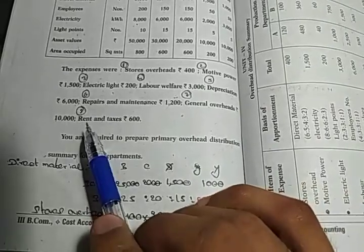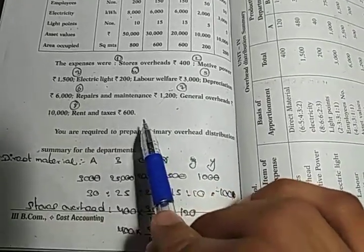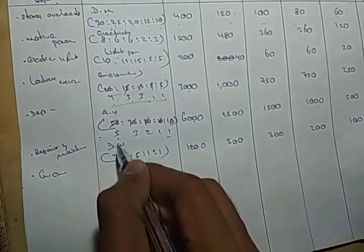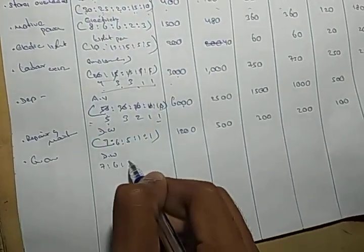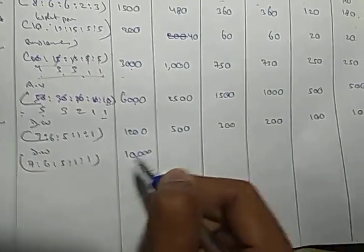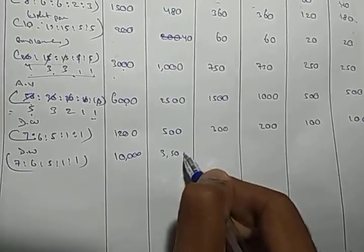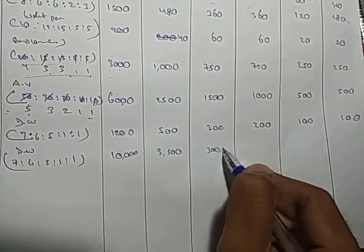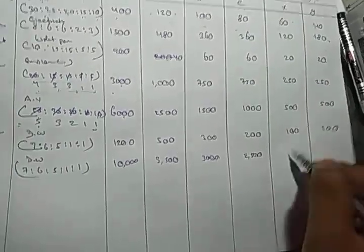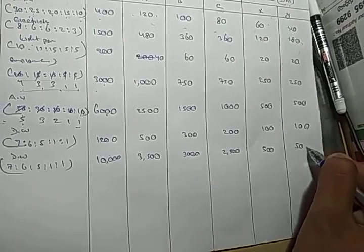General overheads 10000 and rate and taxes 600. In general overheads, the basis is direct wages: 7 is to 6 is to 5 is to 1 is to 1. Total chassis 10000, then divide: 3500, 3000, 2500, 500.